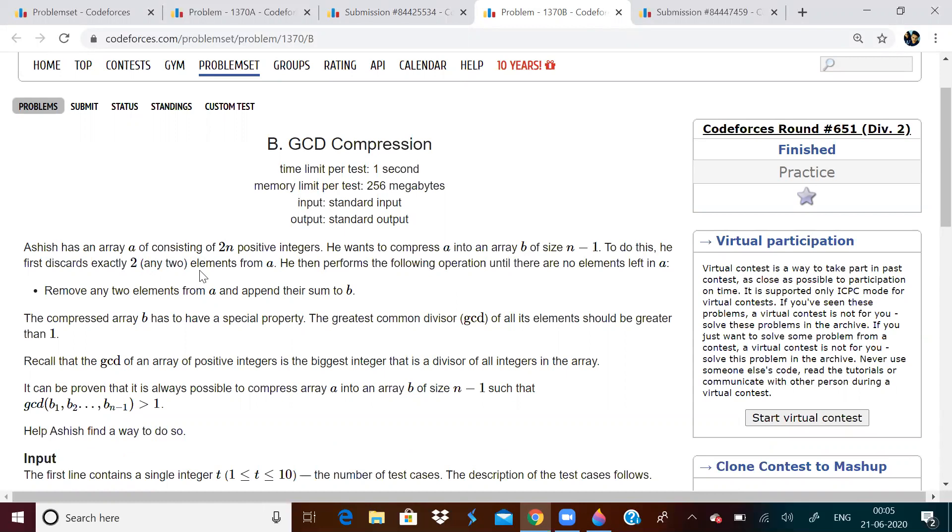To do this, first we will discard some 2 elements, any 2 elements. And the remaining operation, we have to remove 2 elements from A and append the sum to B. But there is a condition: the compressed array B should have a property that the greatest common divisor of all elements should be greater than 1.